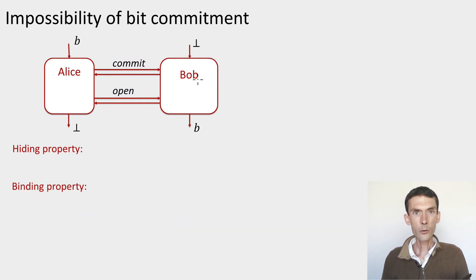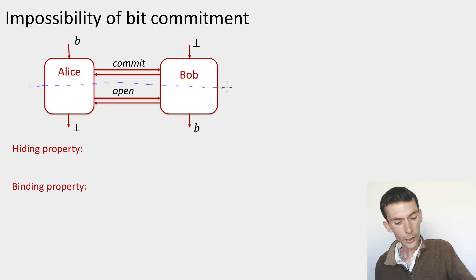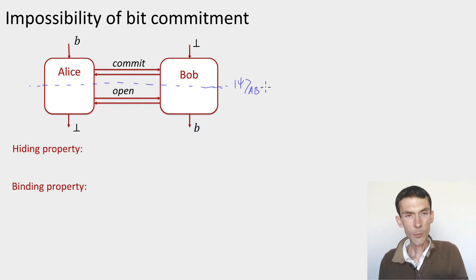The idea is to look at the state of Bob in between the commit and open phases. So let's chop up the protocol here in between the two phases. Let's imagine this is a quantum protocol, and let's call psi_AB the joint state of Alice and Bob at that stage of the protocol. Now this psi depends on the party's inputs and their actions. Only Alice has an input, so we actually have two states, psi_0 and psi_1, depending on b.